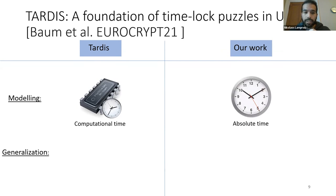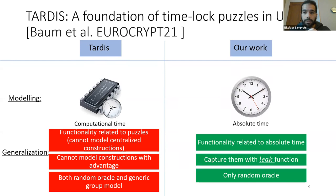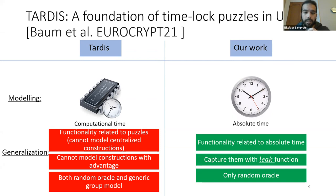The second difference is generalization: in TARDIS they can only capture time-lock encryption schemes based on computational puzzles, whereas in our case we can capture all of the mentioned constructions. They also cannot model an adversary that possesses an advantage over the decryption time over honest parties; in our case we capture such scenarios parameterized by a leak function — useful because some constructions, for example based on Bitcoin with selfish mining, have this property. Finally, in TARDIS the construction is based both on the random oracle and the generic group model; in our case it is based only on the random oracle.